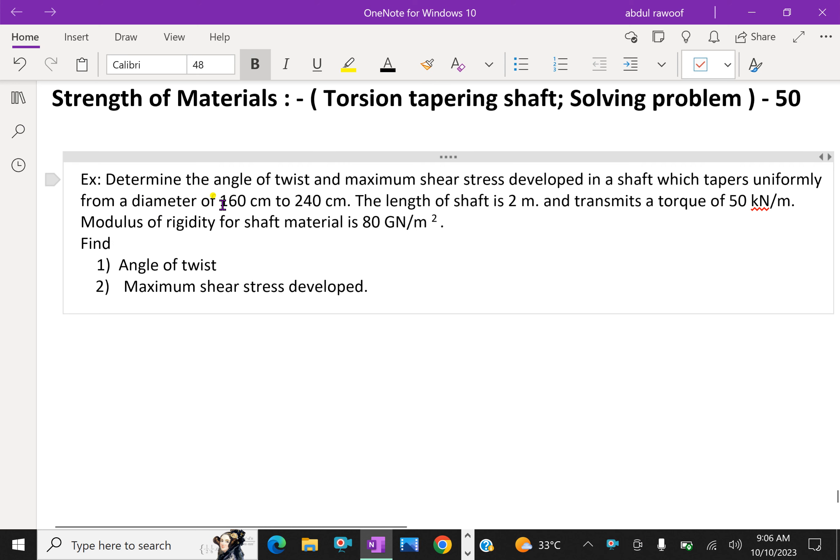Look at this example. Determine the angle of twist and maximum shear stress developed in the shaft which tapers uniformly from a diameter 160 cm to 240 cm. The length of the shaft is 2 m and it transmits a torque of 50 kN·m. Modulus of rigidity for the shaft material is 80 GN/m². Find angle of twist and maximum shear stress developed.